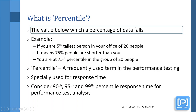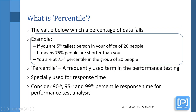Percentile is a value below which a percentage of the data falls. For example, if you are the 5th tallest person in your office and the office has a strength of 20 people, then it implies that 75% of the people are shorter than you, and your height will be the 75th percentile among this set of heights of 20 people.